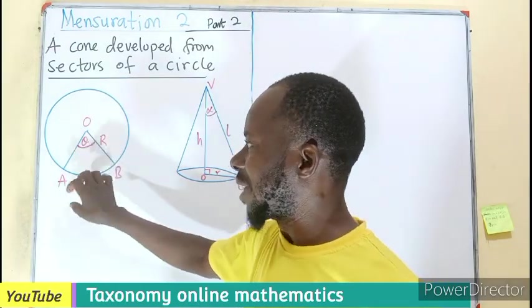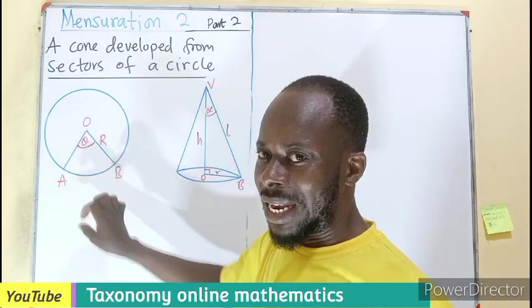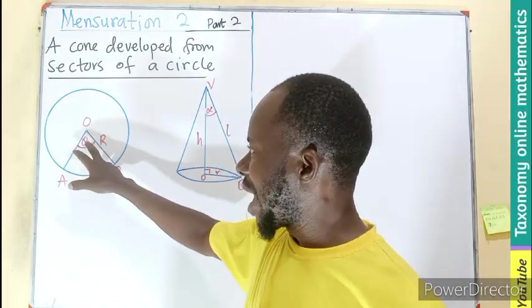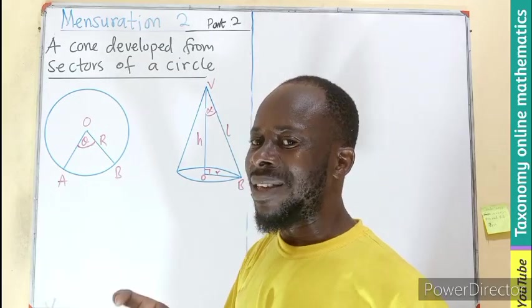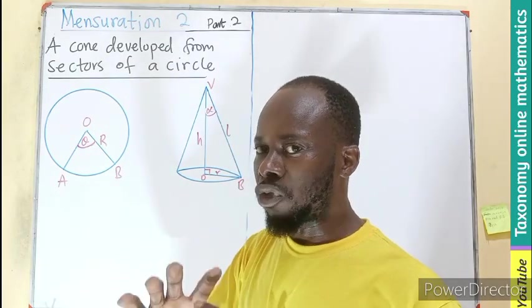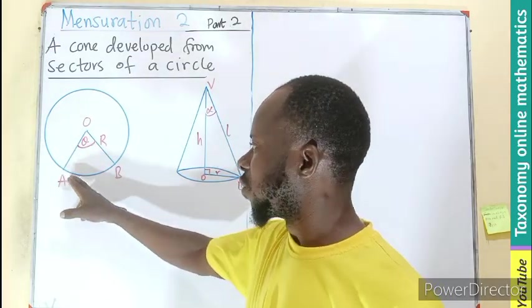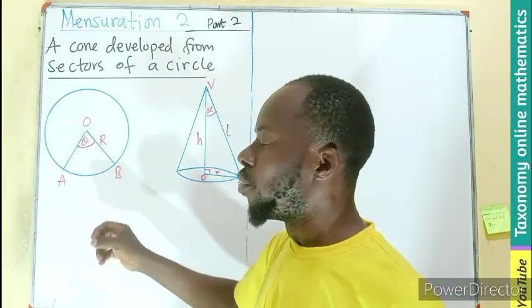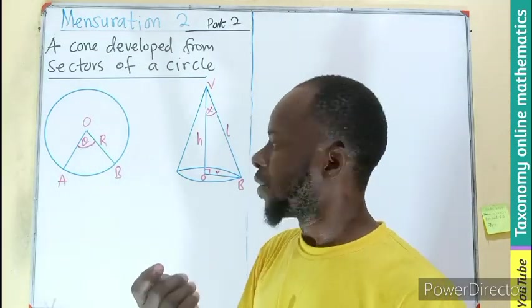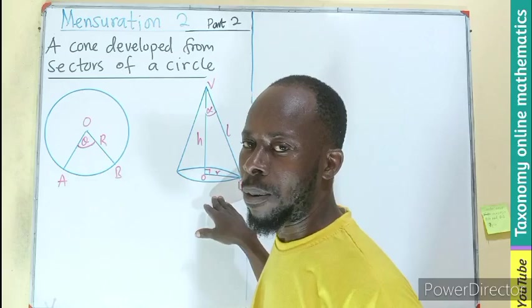Now if this sector is taken out, this sector we are seeing here with the angle being theta is a minor sector, the smaller sector based on the smaller arc. If it is removed, it can be folded to form a cone in this form.